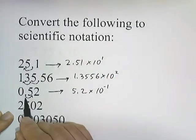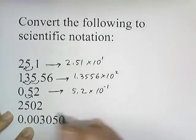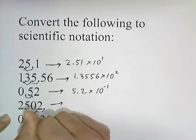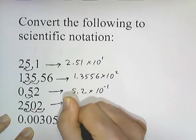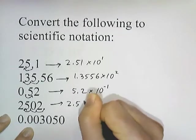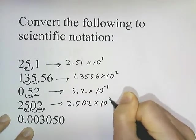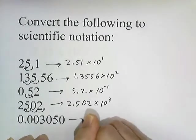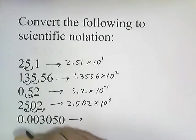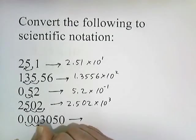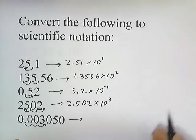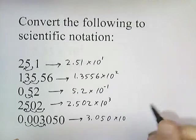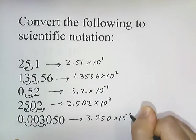Negative because we're moving the dot to the right this time. 2502 — implicitly there's a dot right here, so 1, 2, 3 — that's going to be 2.502 times 10 to the positive 3, since we're moving the dot in this direction. And then 0.003050 — that's 1, 2, 3 spaces over I have to move the dot — so this is going to be 3.050 times 10 to the negative 3.